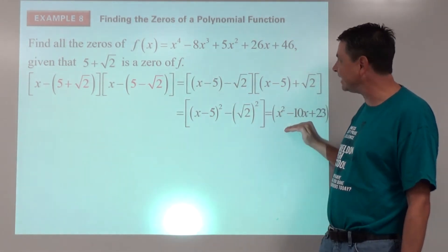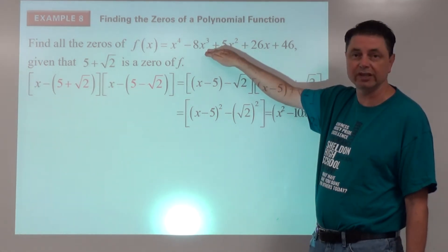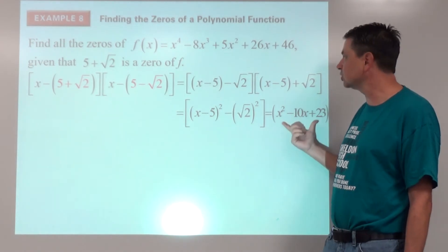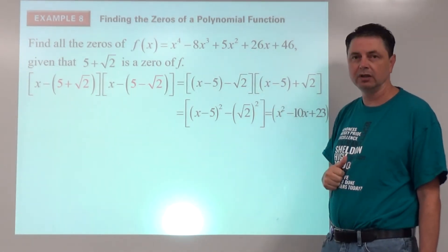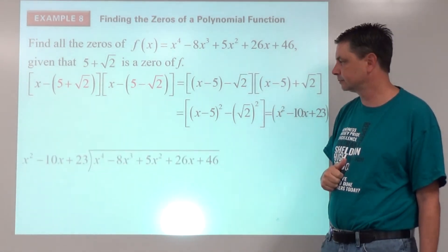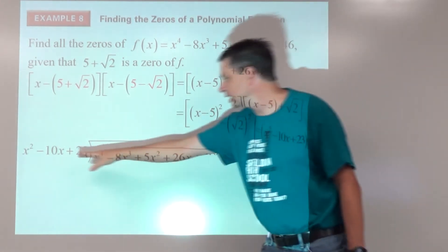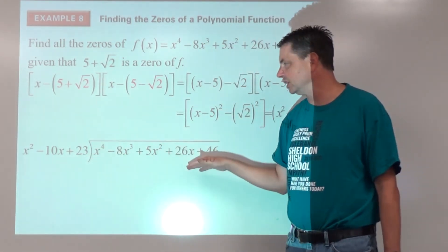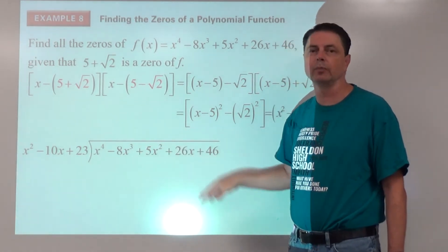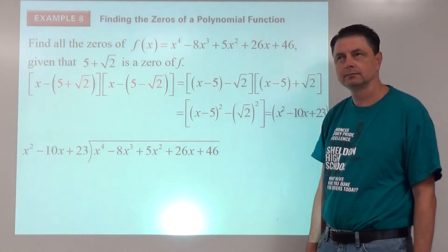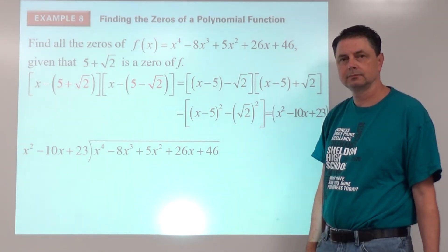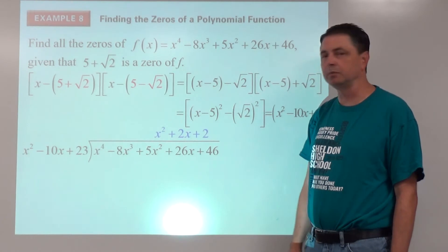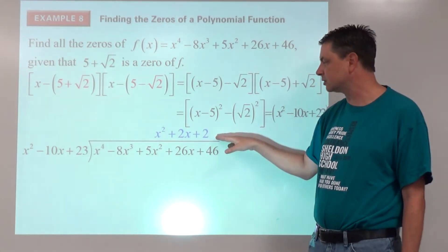Since that factor starts with x squared, we can't do synthetic division, so we use regular polynomial long division. There are no missing terms. You can pause the video here to practice your polynomial division. The result gives us x² plus 2x plus 2 as the other factor.